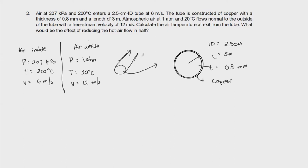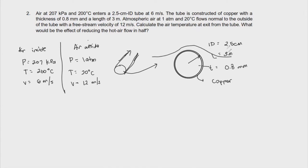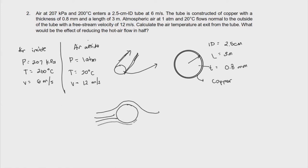So if you notice, this is the tube, and that is a cross-flow movement. So the air flows around it — something like this. Cross-flow is also known as a flow that is normal to the surface.